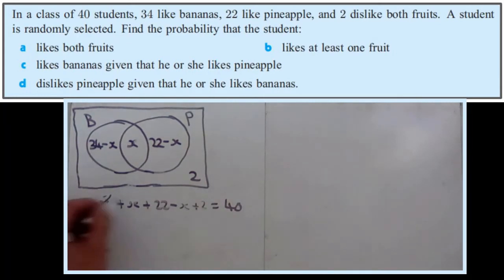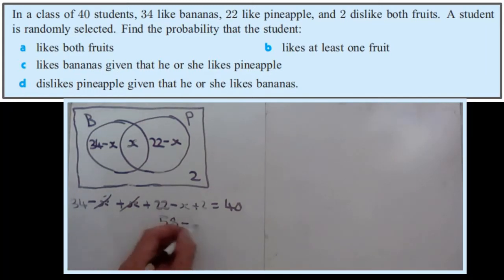A minus X and a plus X will cancel out to nothing. Add up the numbers. 34 plus 22 is 56, plus another 2 is 58. So 58 minus X equals 40, so for that to be true, X must equal 18.